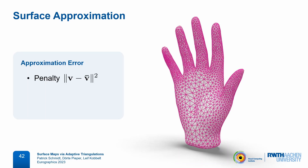In some experiments we replaced this penalty by a barrier, which allows us to maintain hard approximation bounds. In terms of complexity, this is the only term in our objective that depends on the number of input mesh vertices — a dependency we wanted to avoid — so in practice we just choose a fixed-size subset of vertices at which we measure this error, and this is usually enough.